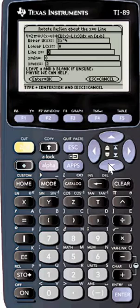We're going to rotate about the line x equals 3. The upper function is 3x to the 4th, the lower function is 0, and the x bounds are 0 and 2. All we do is press enter to see the setup.